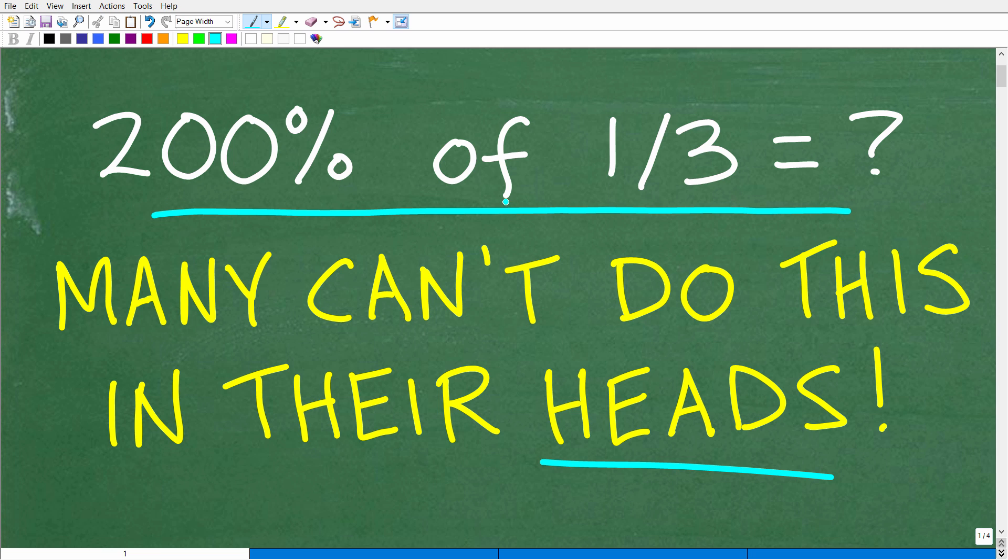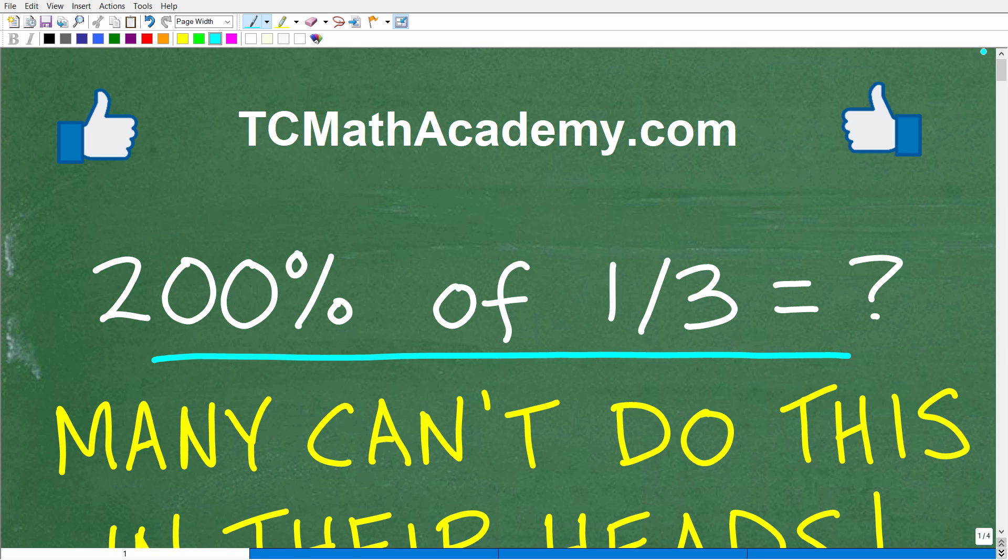200% of one-third is equal to what? All right, so again, the only rule here is no materials, no paper, no pencil, no calculators. And if you have your answer, go ahead and put that into the comment section.